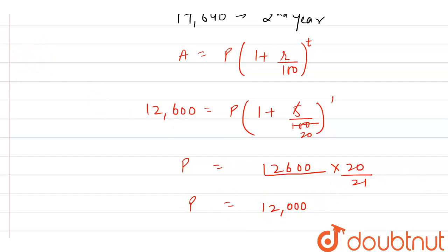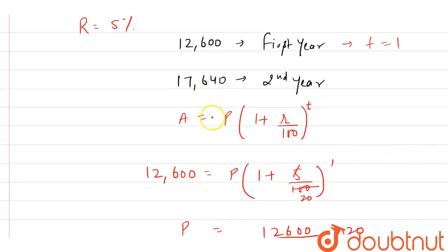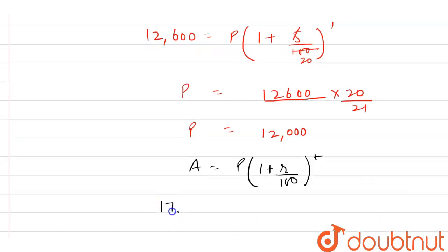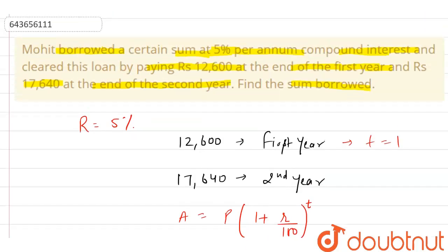Now for the second year, using the same formula A equals P into (1 + R/100) raised to power T: the amount in the second year is Rs 17,640. So 17,640 equals P into (1 + 5/100), which is 1/20, raised to power 1, because from the end of the first year to the end of the second year the time period is 1 year.